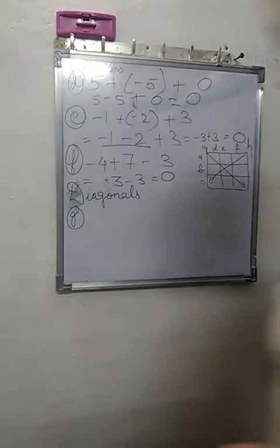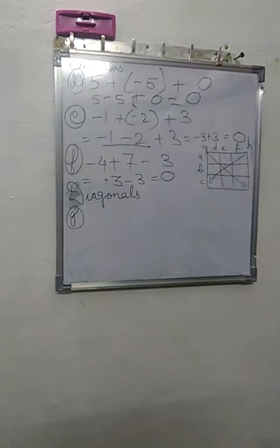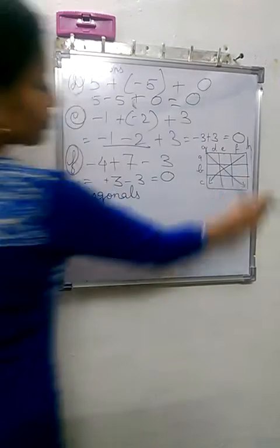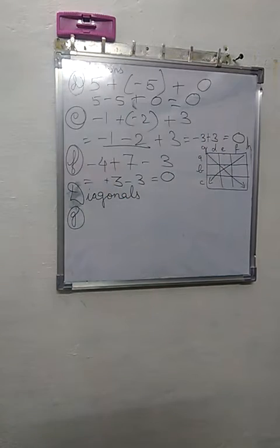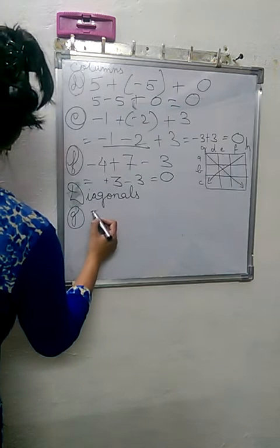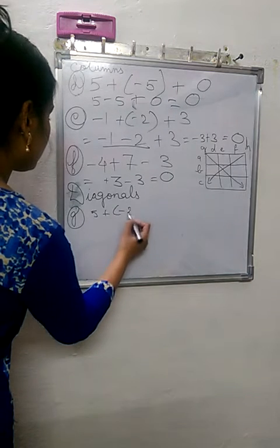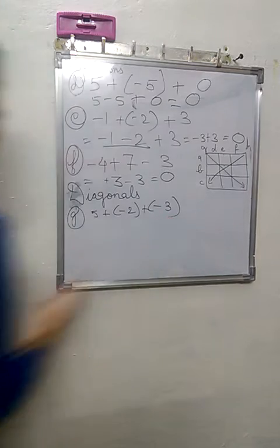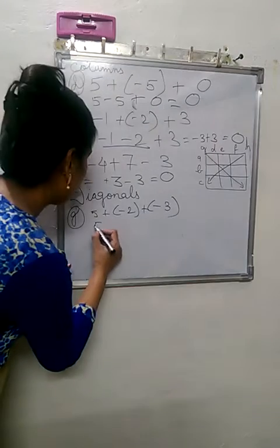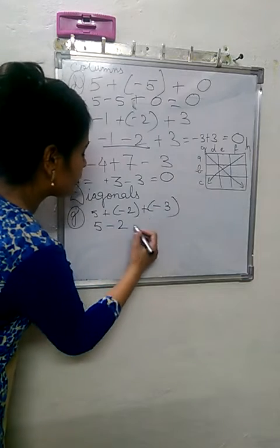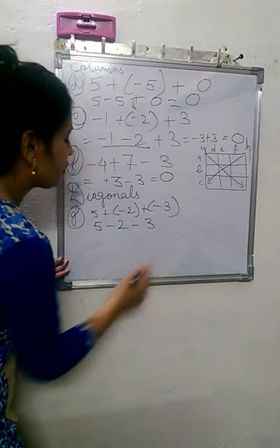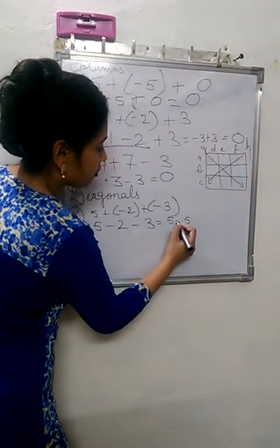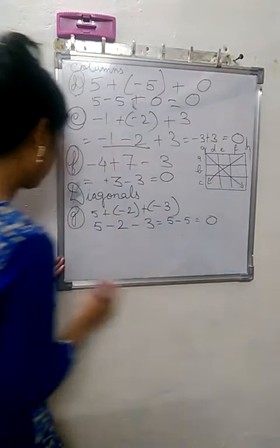Now going ahead with the diagonals, we write the numbers. G means numbers who are written like this, we will be adding them. So it will be 5 plus minus 2 plus minus 3. We know plus minus is minus. 5 minus 2, plus minus is again minus. Minus minus becomes plus. So we add the numbers: 2 plus 3 is 5. Answer is always negative. 5 minus 5 gives us 0.